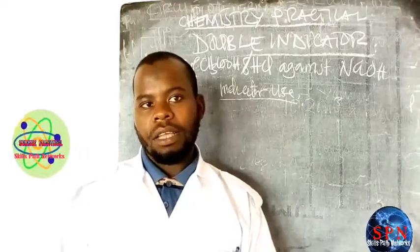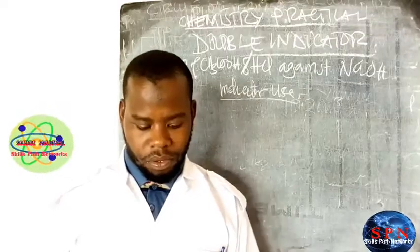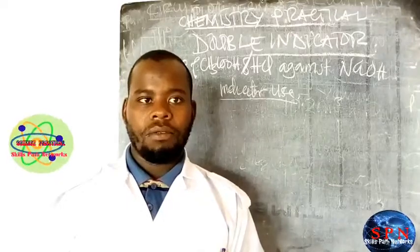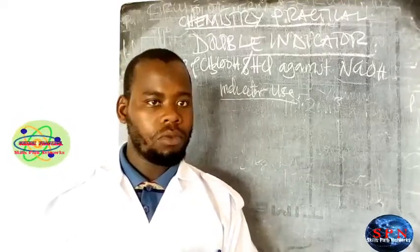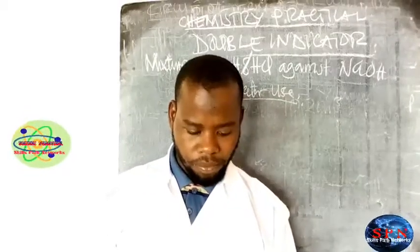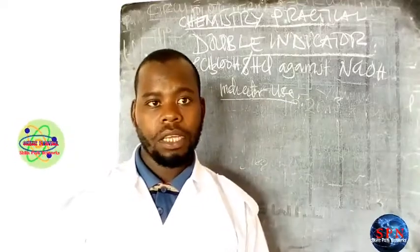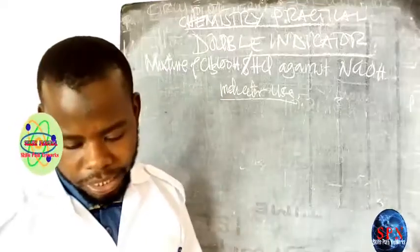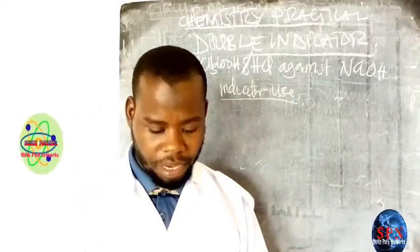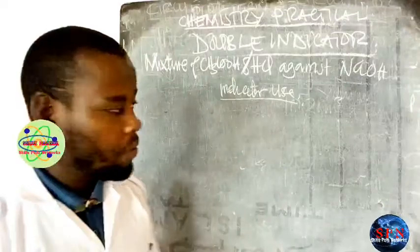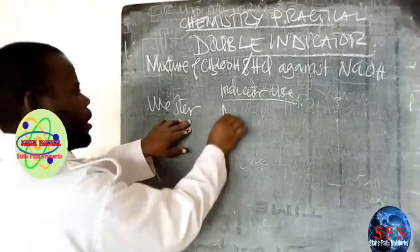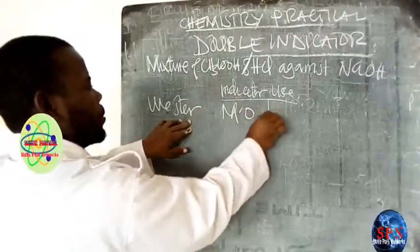If we were to start with phenolphthalein, we would disturb the methyl orange and it would not have a chance to be used in the experiment. So you are supposed to start with methyl orange, which will support only the strong acid in the conical flask. What remains will be supported by phenolphthalein indicator.